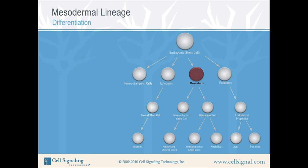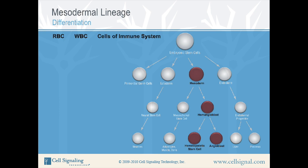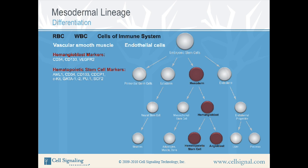The second branch of the mesodermal lineage consists of the hemangioblast, which is the precursor to both hematopoietic stem cells and the angioblast. Hematopoietic stem cells differentiate into red blood cells, white blood cells, and cells of the immune system. The angioblast further differentiates into vascular smooth muscle and endothelial cells. Markers of the hemangioblast include CD34, CD133, and VEGF receptor 2. Markers used to identify hematopoietic stem cells are AML1, CD34, CD133, CDCP1, CKIT, GATA1 and 2, PU1, and SCF. The angioblast can be identified using antibodies directed against VE-cadherin and VEGF receptor 2.